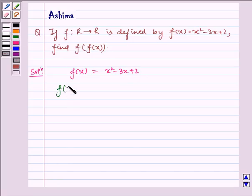So f(f(x)) will be equal to [f(x)]² - 3[f(x)] + 2.